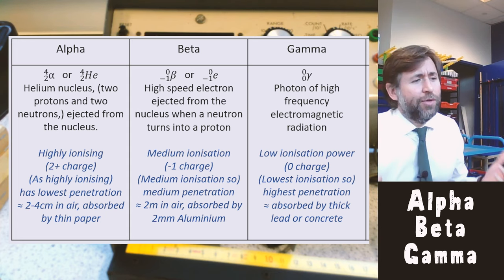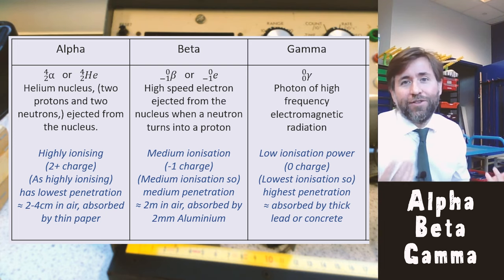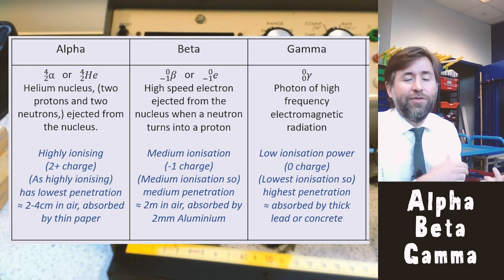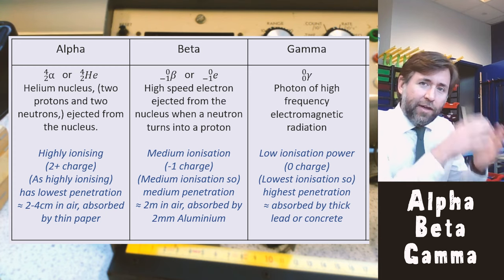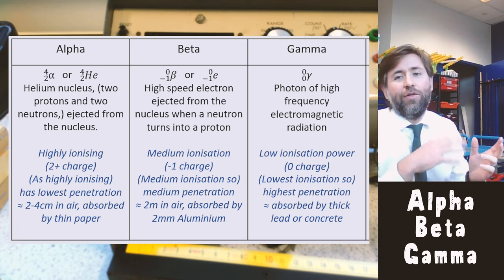And lastly gamma. Well we're not as worried about gamma because it's so penetrating and so not ionizing that it'll probably just go straight through us. So that's not such an issue, but very concentrated beams of gamma can still do damage. So you have to use the ionizing ability and the penetration power together to weigh up how dangerous something is.